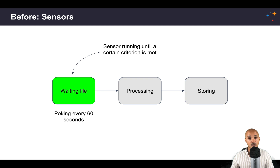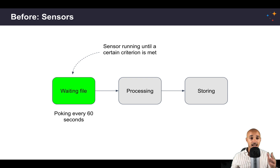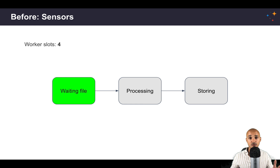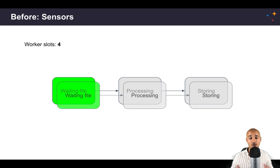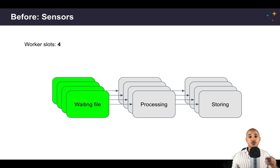A very important point to keep in mind is that like any other task in Airflow, a sensor takes a worker slot in order to be executed. In Airflow, you have a limited number of worker slots, meaning a limited number of tasks you can execute in parallel. Since a sensor is by definition a long-running task, you might end up in trouble. Imagine you have four worker slots available and four different sensors all waiting at the same time — you won't be able to run any more tasks, and that is a big issue.